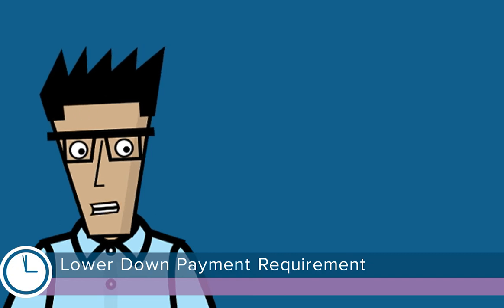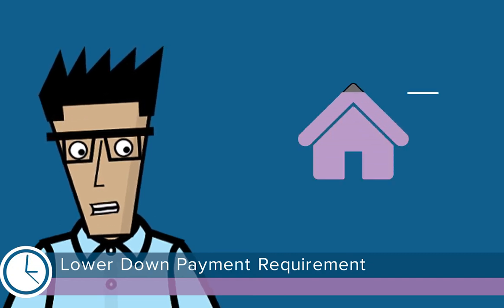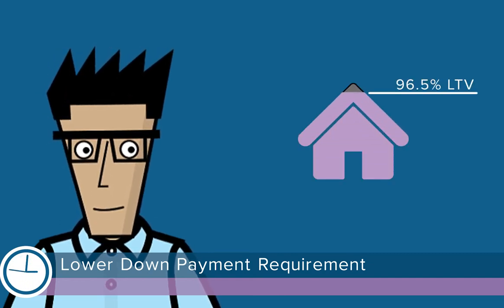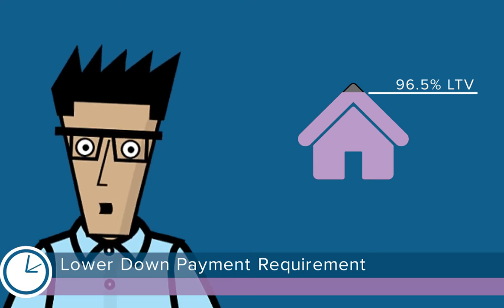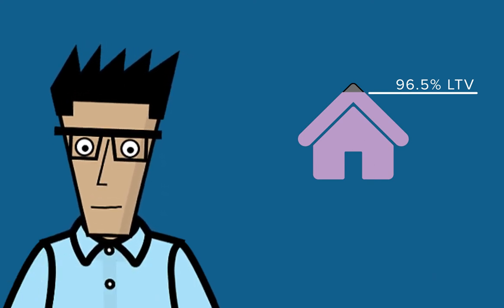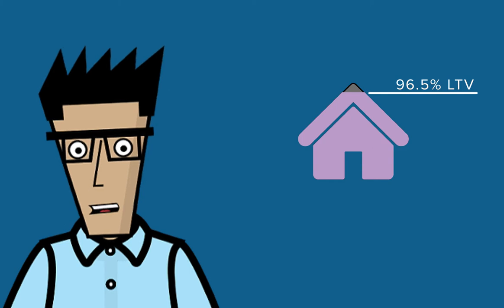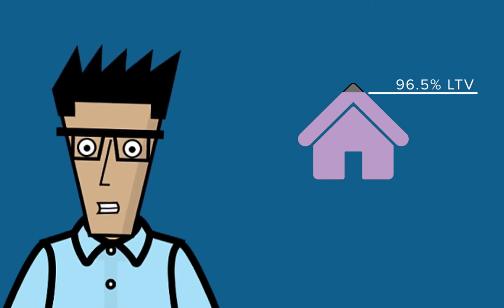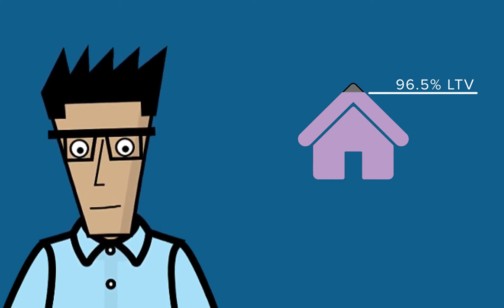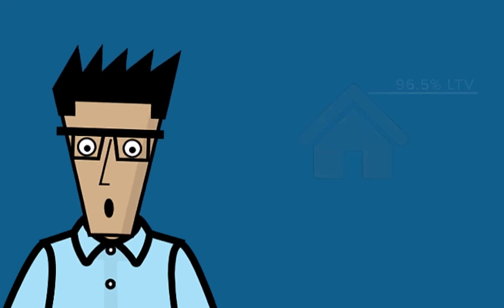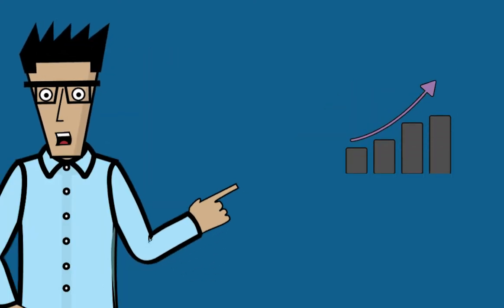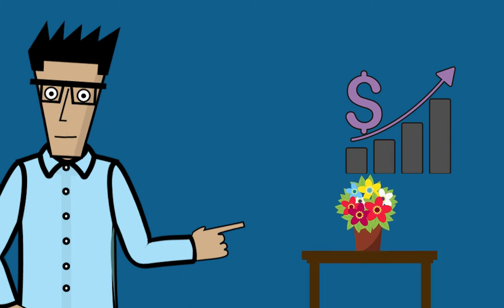FHA allows loan-to-value percentages as high as 96.5%. This lowers the down payment required from borrowers. This feature is great for consumers who have yet to save for a large down payment and it provides an option for those who have saved more money to keep those funds for other purposes such as funding investments or perhaps decorating their new place.